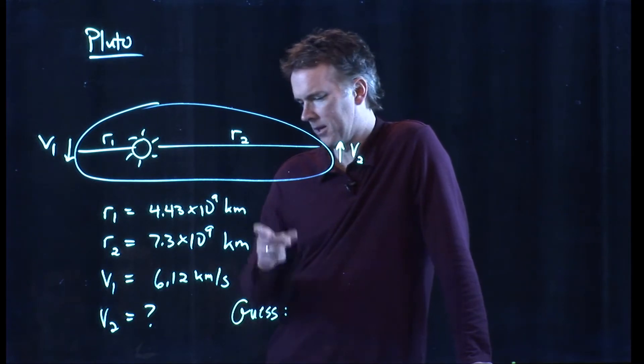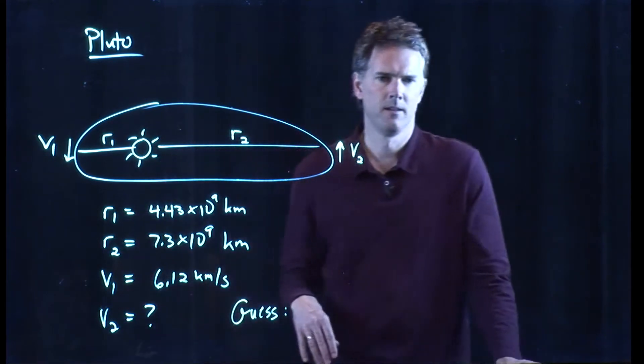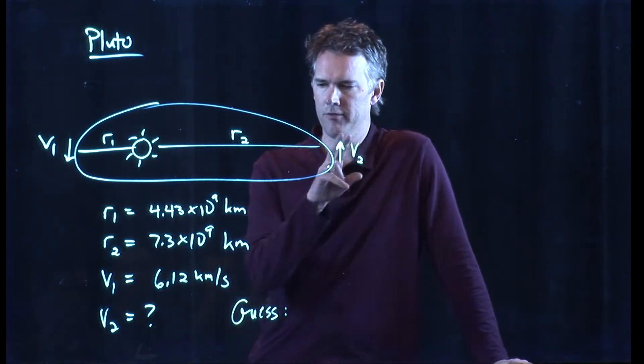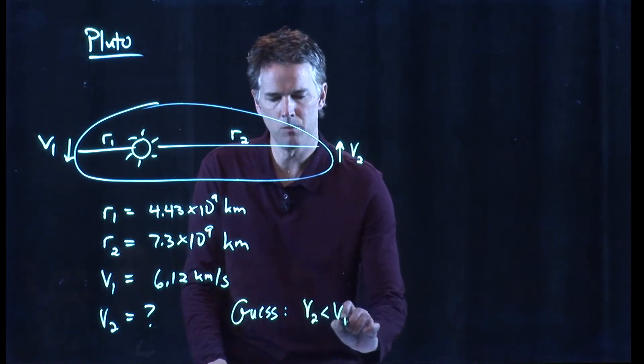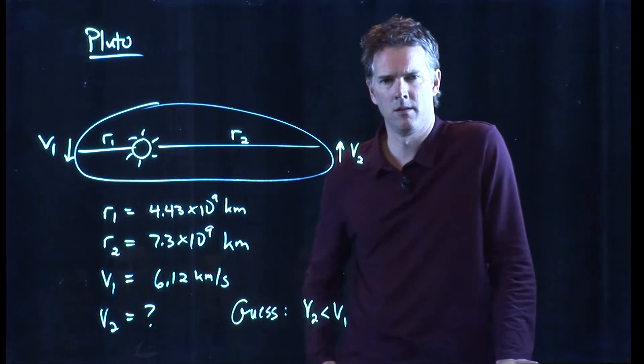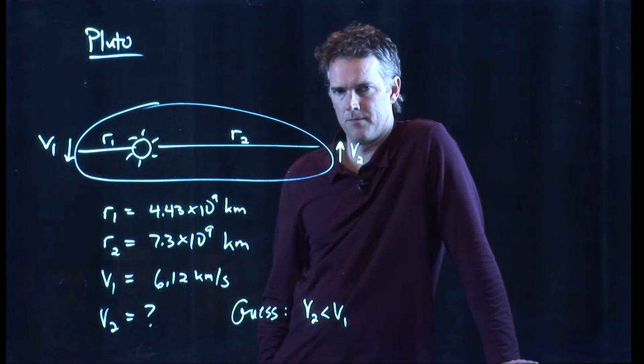Jamie, you want to say something. Hand the mic to Jamie. Okay, Jamie, we just took a guess that V2 would be smaller than V1. Why do you think that? The distance is further, so the speed would have to be slower for the area to be equal to the other.